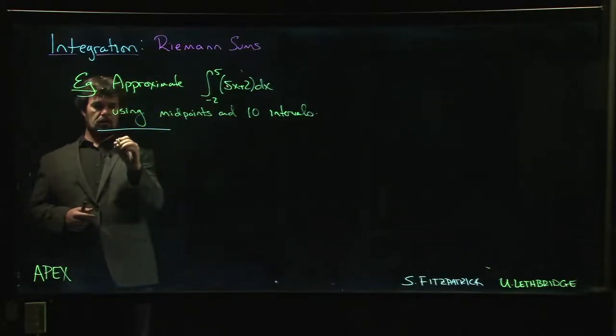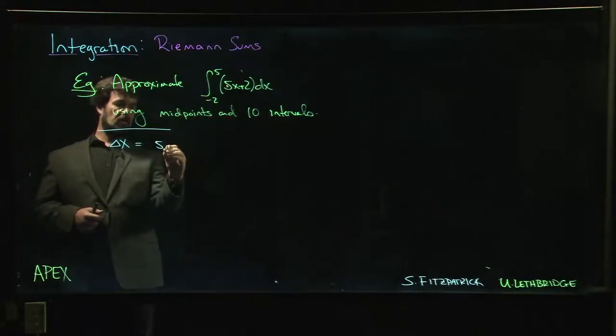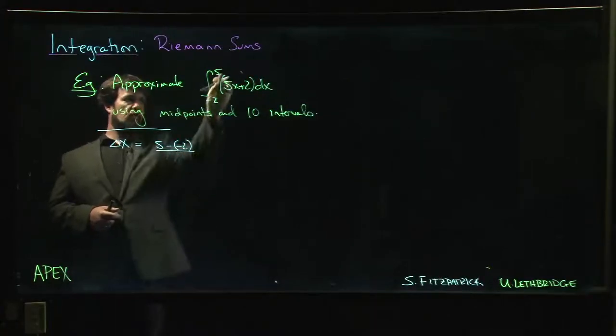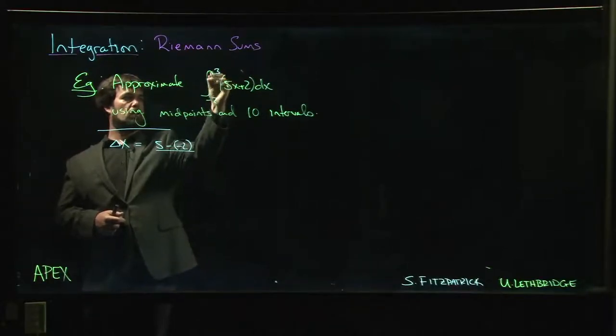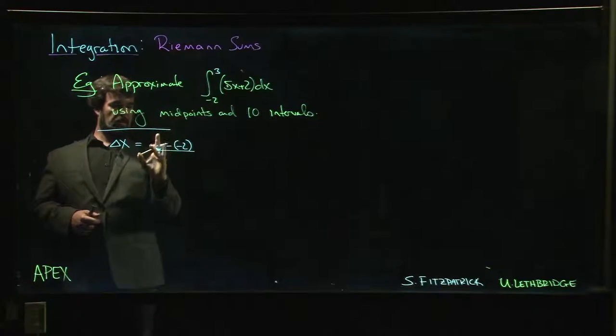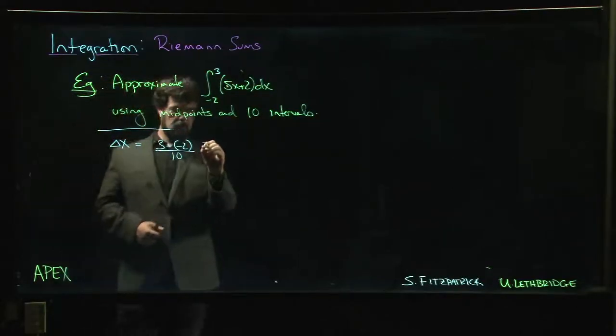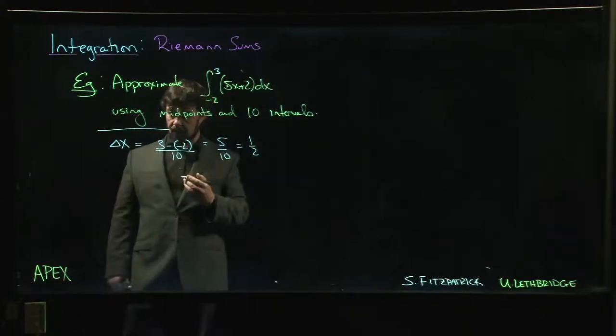So the first thing we do is we get our delta x. So our delta x is going to be 3 subtract minus 2 over 10, 5 over 10, which is a half.